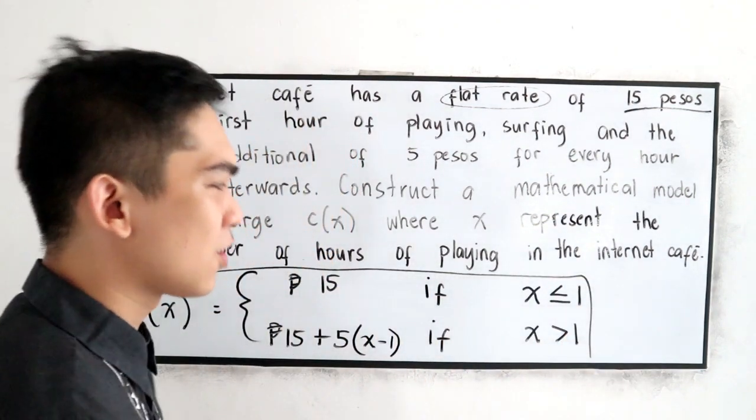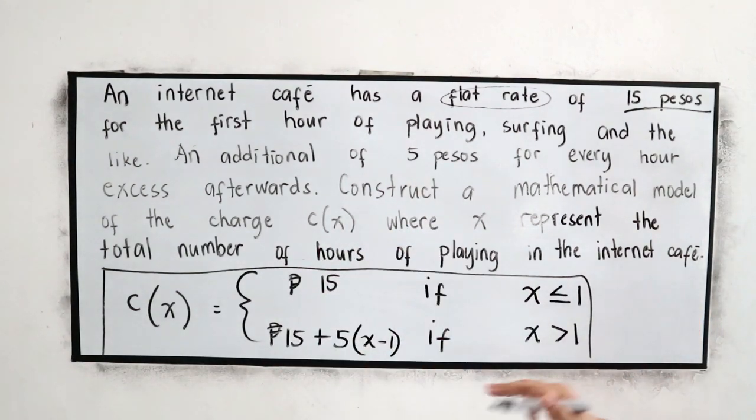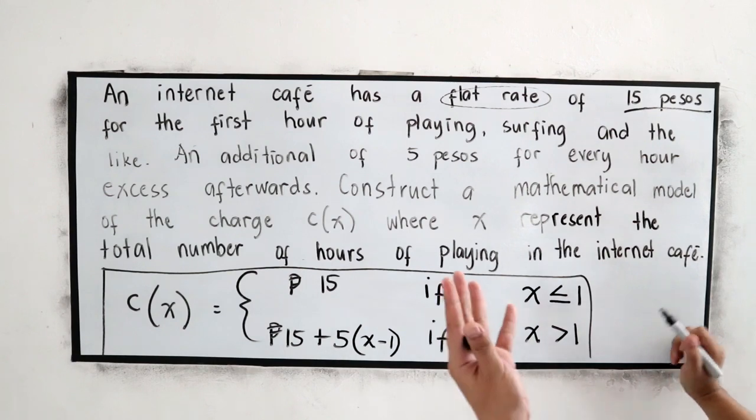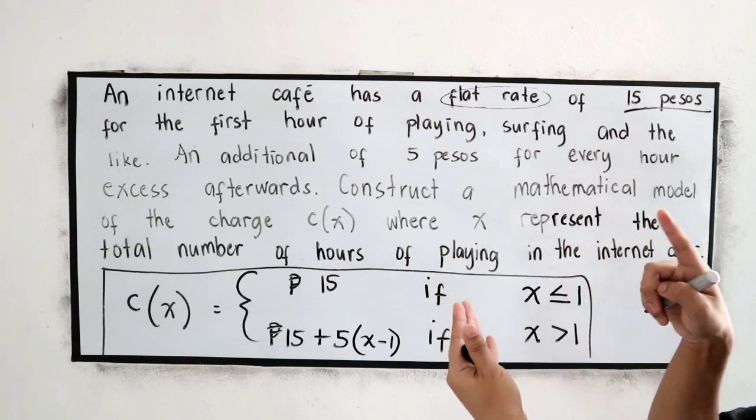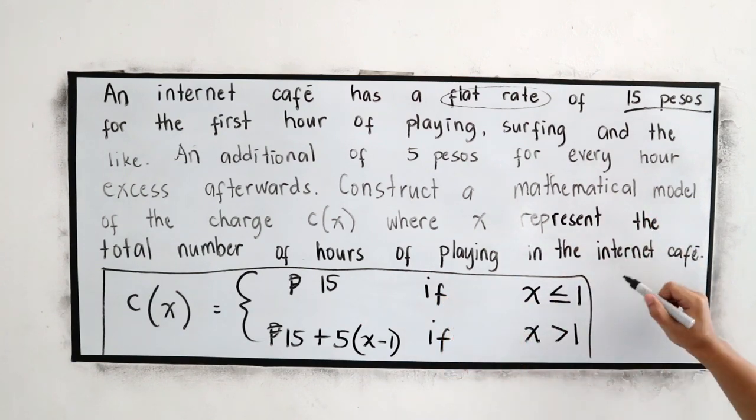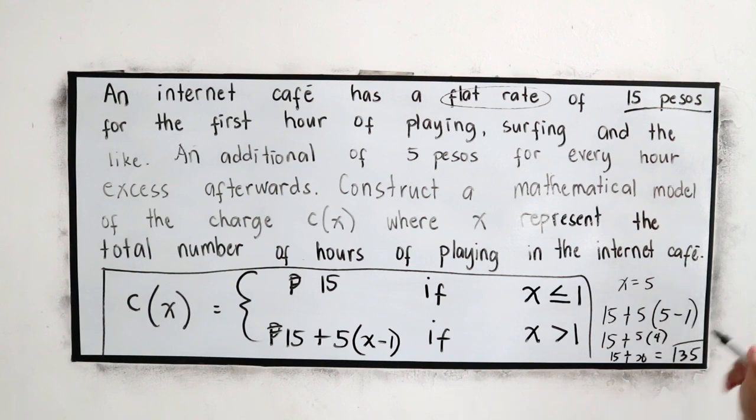Ito na ngayon yung ating model. Pwede natin i-check kapag 5 hours. Alam natin na ang babayaran ay: kapag 2 hours 20, 3 hours 25, 4 hours 30, 5 hours 35. I-check natin. So if x 5 hours: 15 plus 5 times (5 hours minus 1), so 15 plus 5 times 4, so 15 plus 20, that is 35. So tama sya.